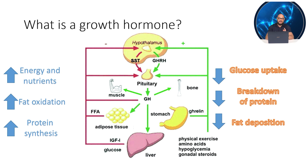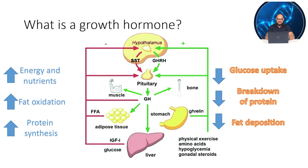Let me rephrase and repeat that. Under the influence of growth hormone, cells enter an anabolic protein state with increased amino acid uptake, increased protein synthesis, and decreased catabolism or destruction of proteins. Fats are processed and consumed by stimulating triglyceride breakdown and oxidation in adipocytes. This is the direct mechanism of action of GH.